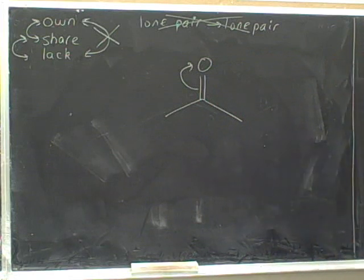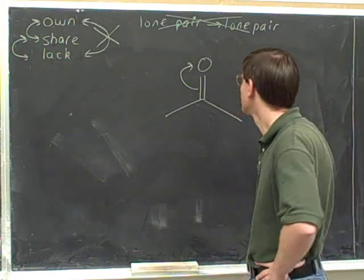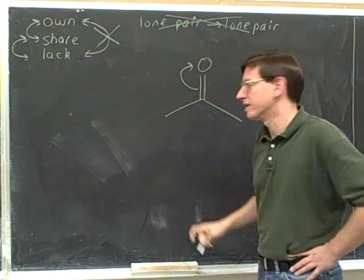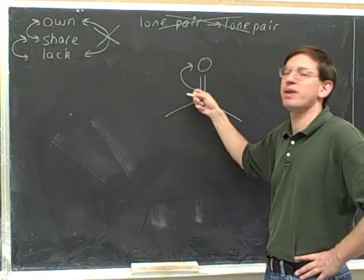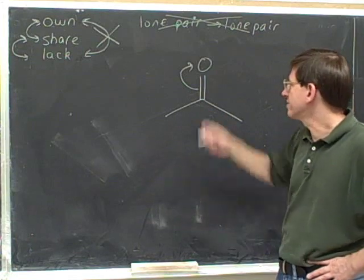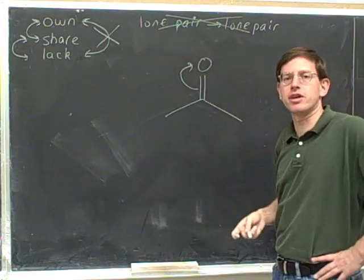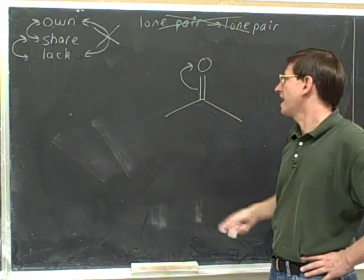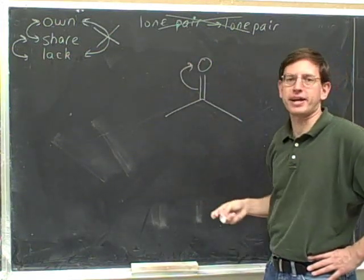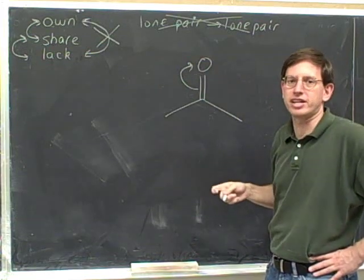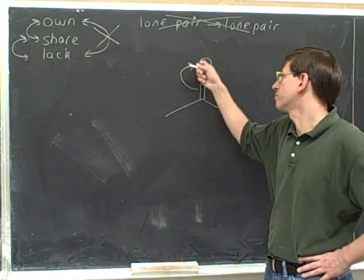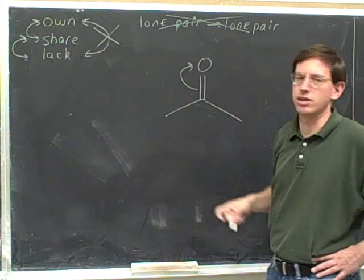Does this seem legal? We're forming a lone pair, but we're not forming it out of a lone pair — we're forming this new lone pair out of the pi bond. That's perfectly okay. The only thing you're not allowed to do is take one lone pair and make it into another lone pair. So this is legal. It's okay to have the head pointing directly at an atom, as long as the tail is not coming from a lone pair. Here we're forming a lone pair but not coming from a lone pair, so this is also legal.